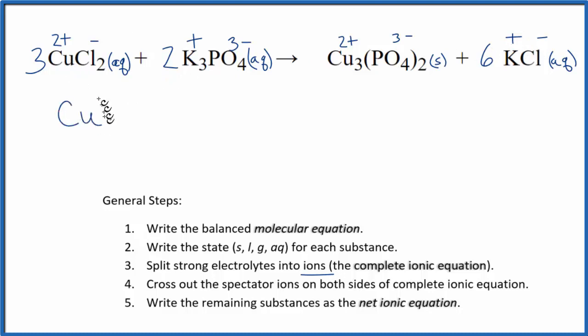We have Cu, two plus, that would be aqueous. I won't write that each time. And the three here means we have three of those. Plus, we have the Cl minus, that's the chloride ion. We have two times three, six of those. Plus, we have three of the potassium ions, times two. So three times two, six of those. And then we have the phosphate ion, PO4, three minus. And this two applies to everything, so we have two of those, two phosphate ions. Those are our reactants.